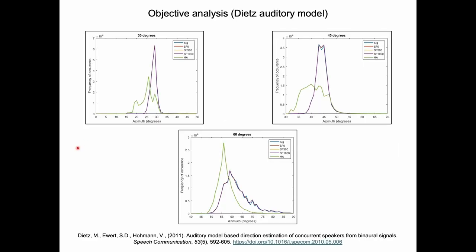The results of the Dietz model indicate that all the broadband filtering conditions are close to the results of the original signal. However, the green one is the commercial hearing aid which deviates from the original signal results, and the data is observed to be broader than the original signal, as you can see at 45 degrees and 30 degrees.